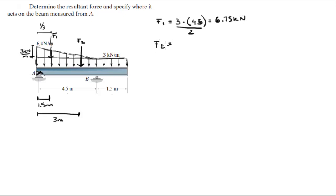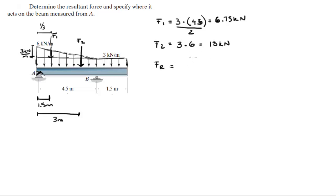F2 is a rectangle, so it's 3 times the length of the rectangle which is 6, equal to 18 kilonewtons. The resultant force is equal to the sum of F1 and F2, which comes out to be 24.75 kilonewtons.